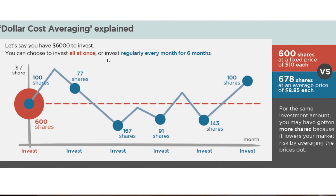So the first person chooses to take their six thousand dollars, put it all in at once, and buys a ten dollar stock — they're able to buy six hundred shares. Over here, six hundred shares at ten dollars each equals the six thousand dollars.